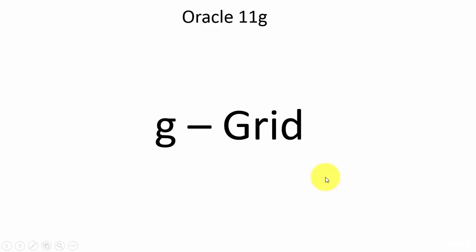In this session, let's learn about Oracle 11g. You might be thinking, what is 'g'? G stands for grid. Oracle tagged the Oracle Database version with the letter 'g' because it supports grid computing.